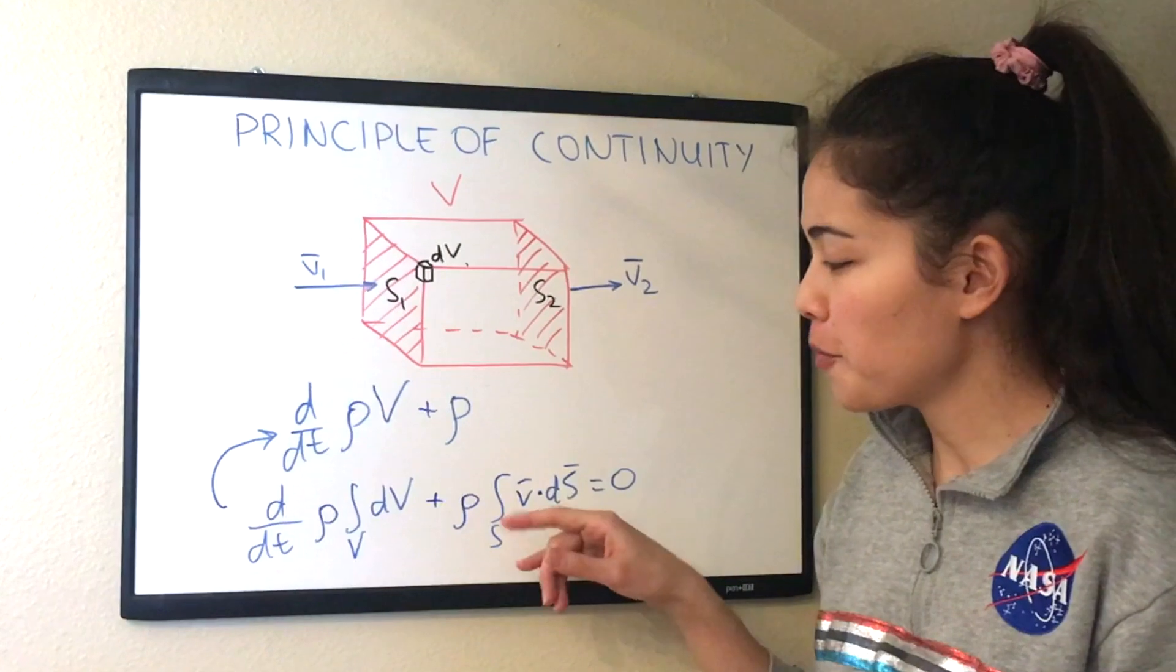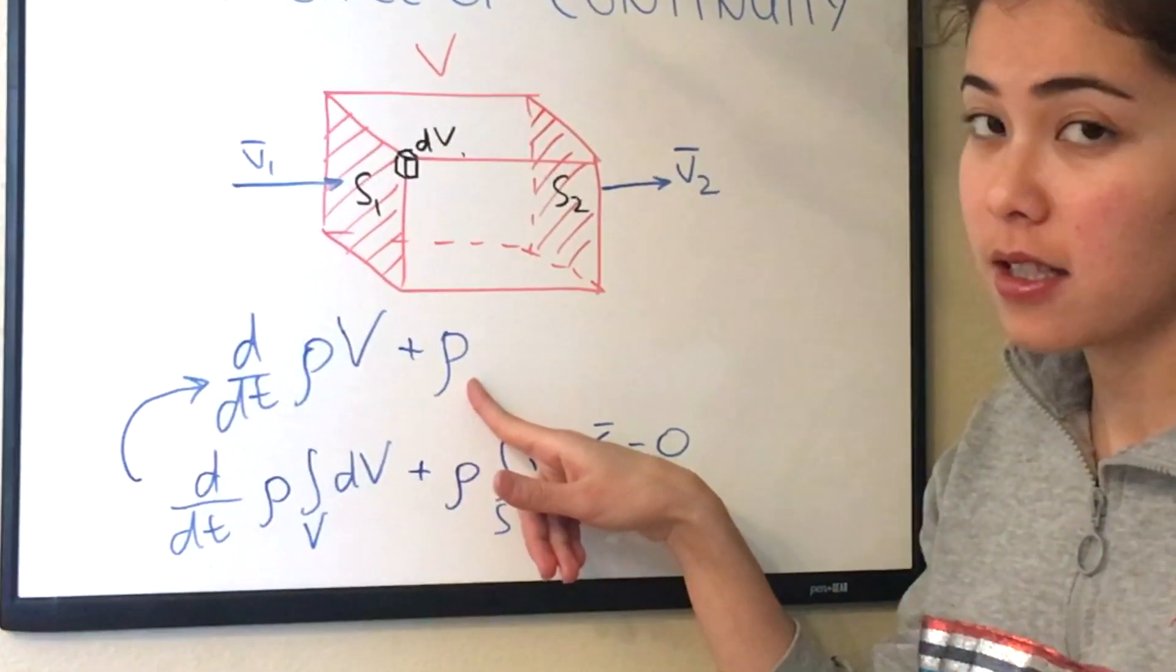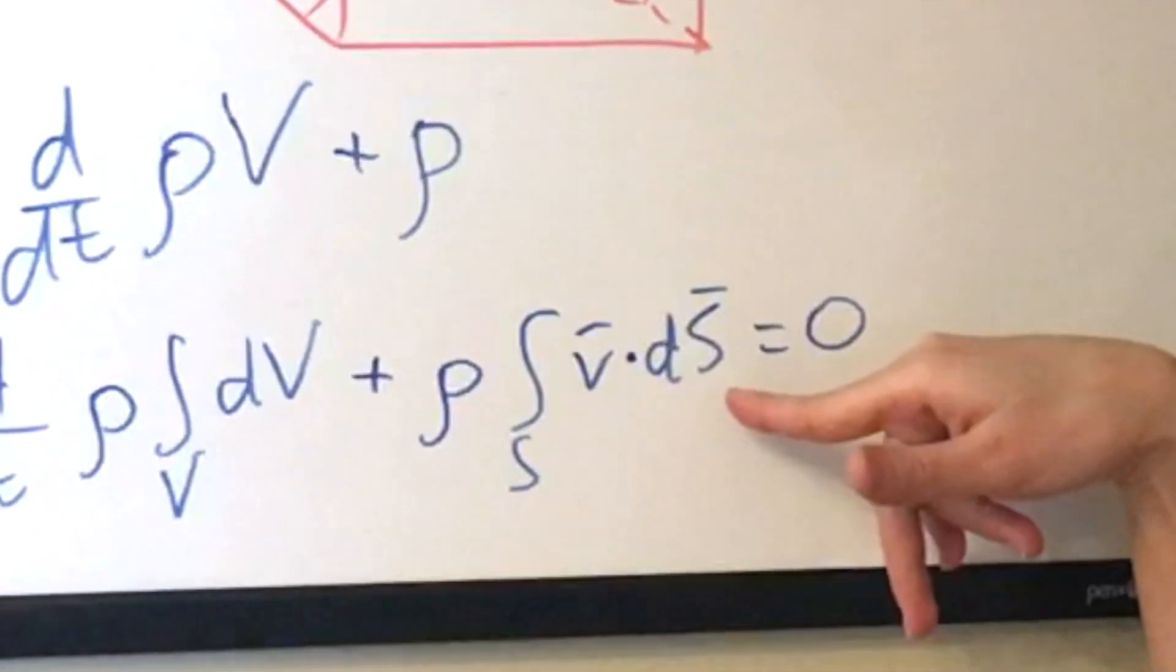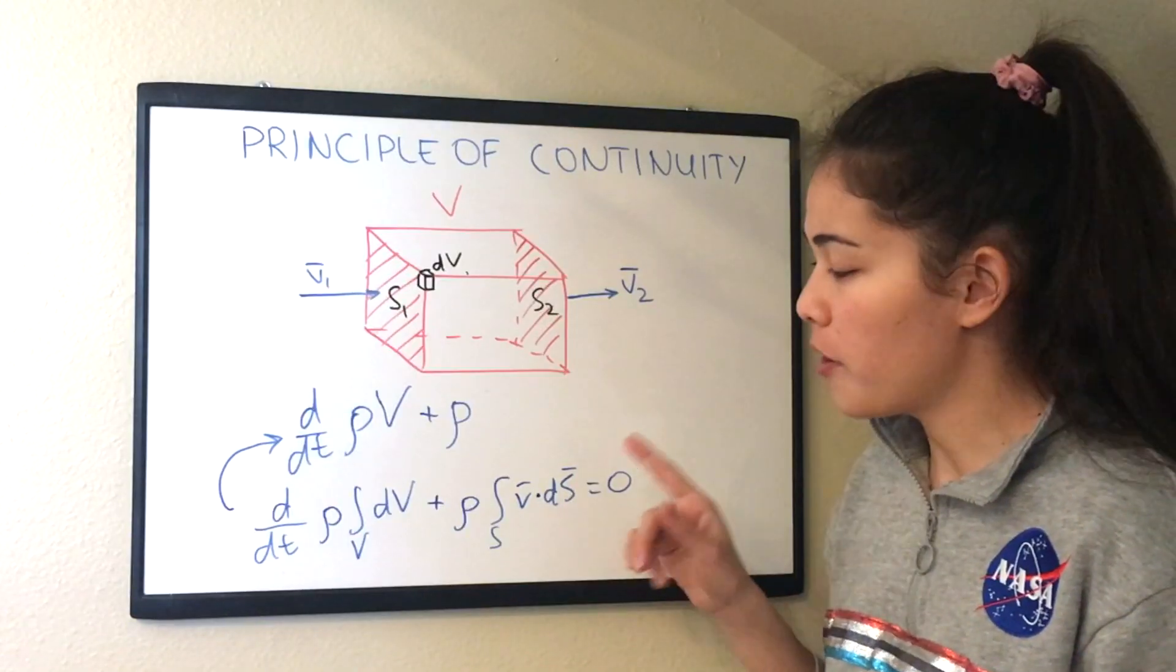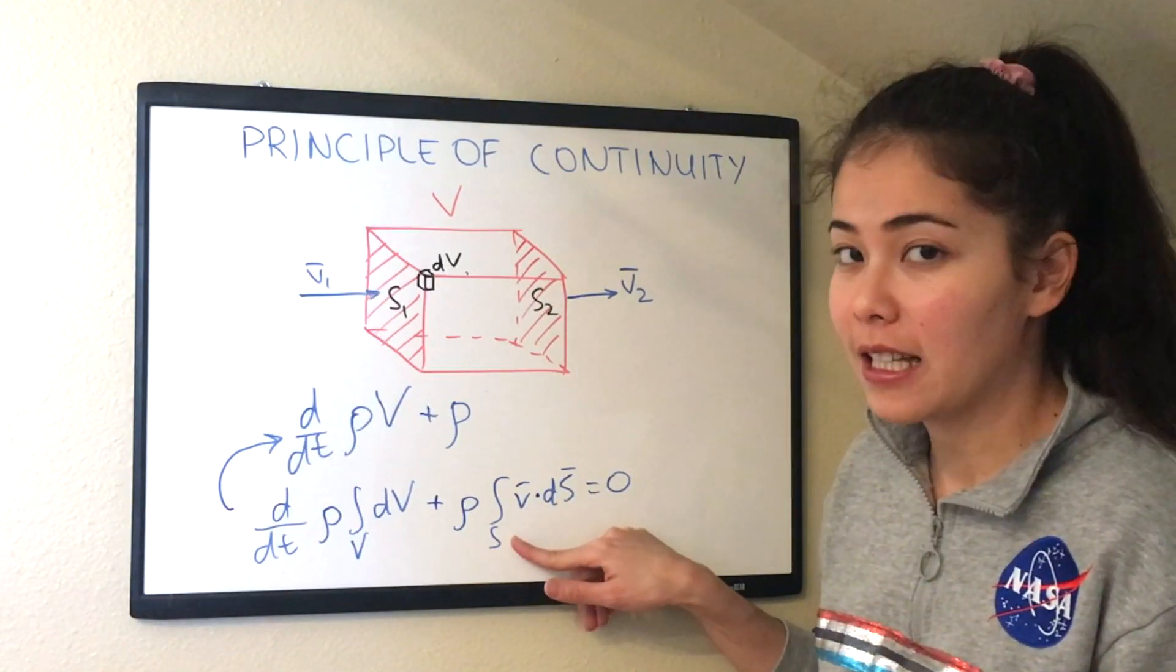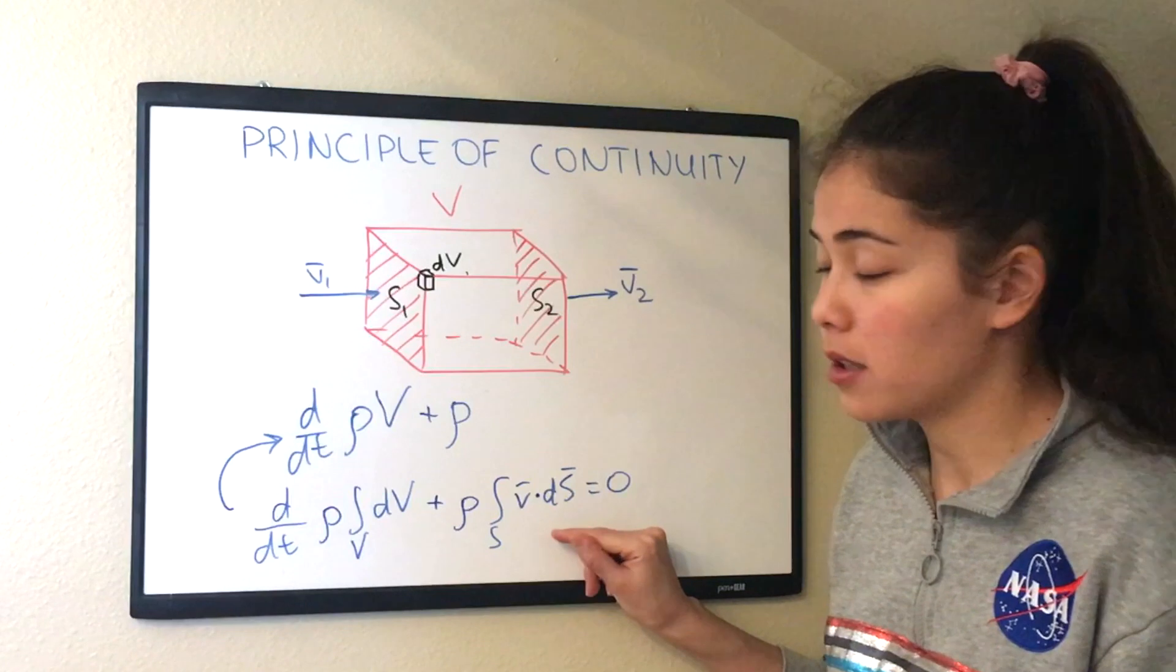And in the second term we copy the density because it's constant. And now let's think what should we do with this integral. We could do two things. Either first we do the dot product or we do the integral. Let's do the dot product first. Now let's simplify it even more.